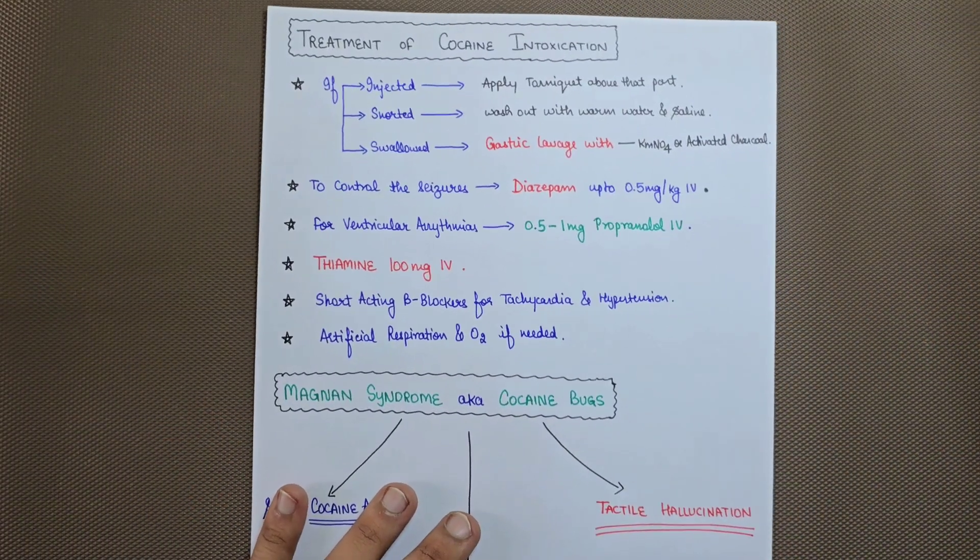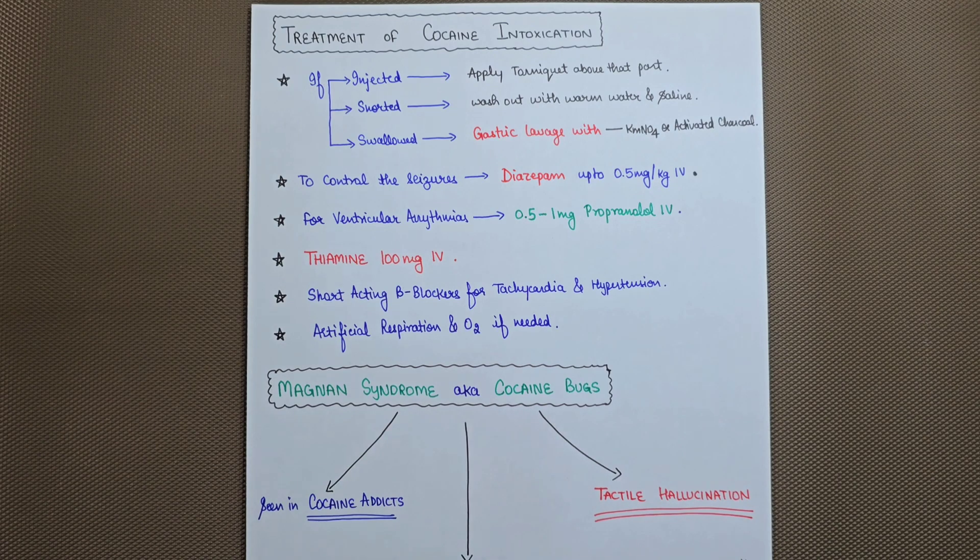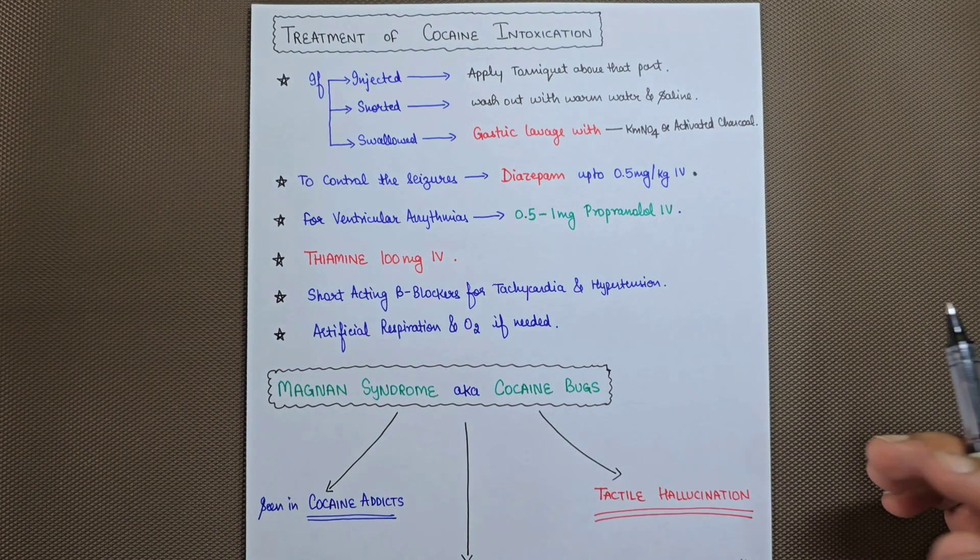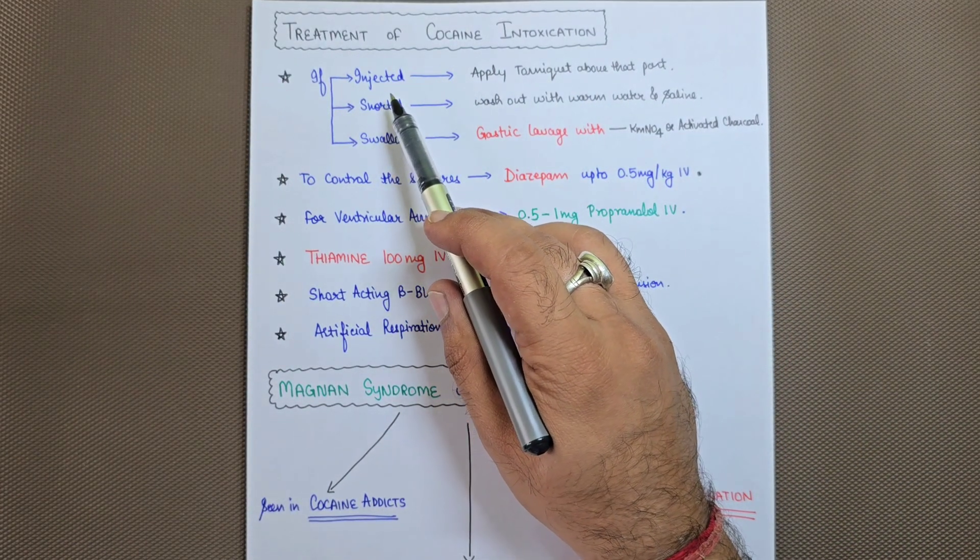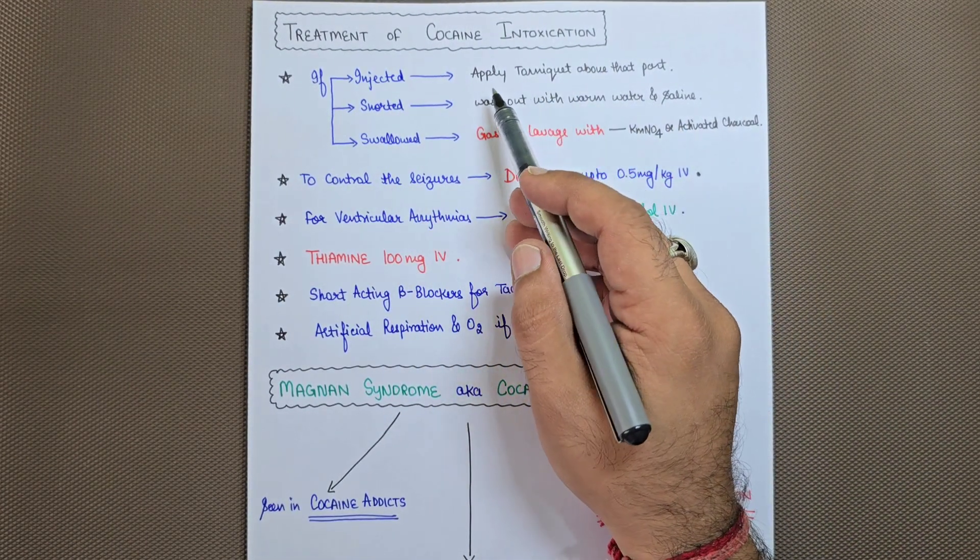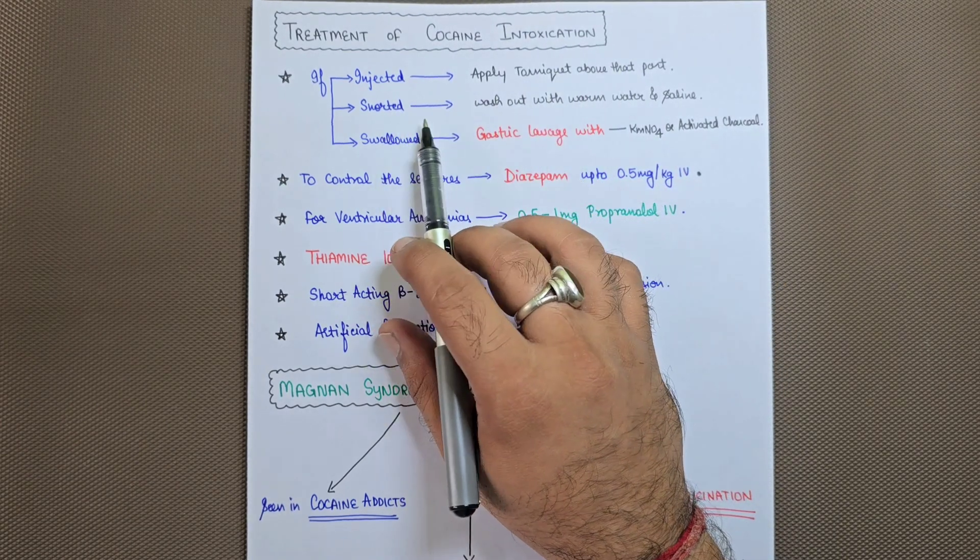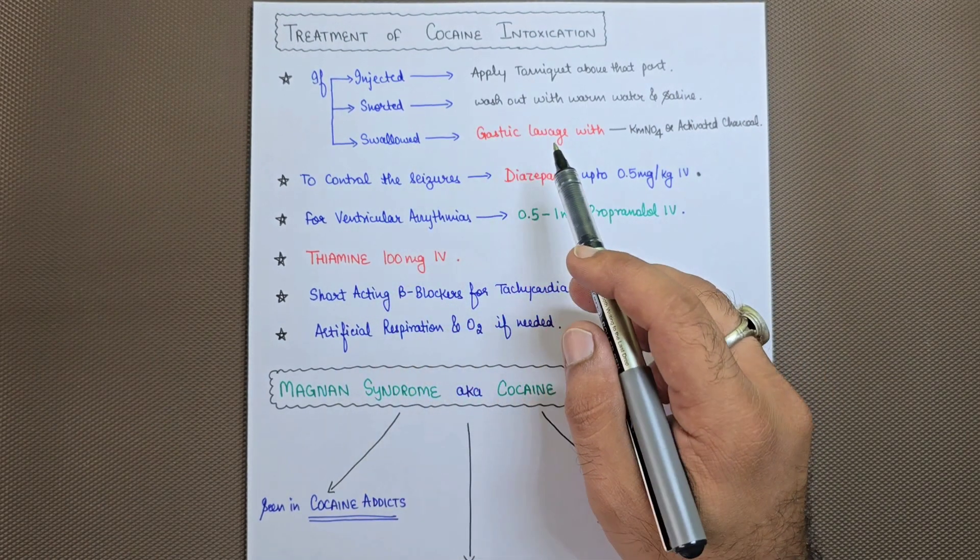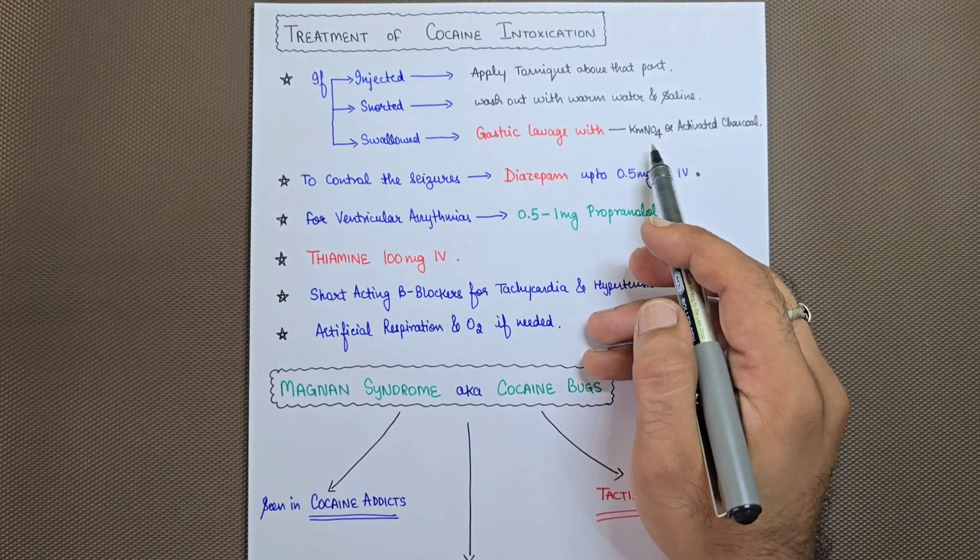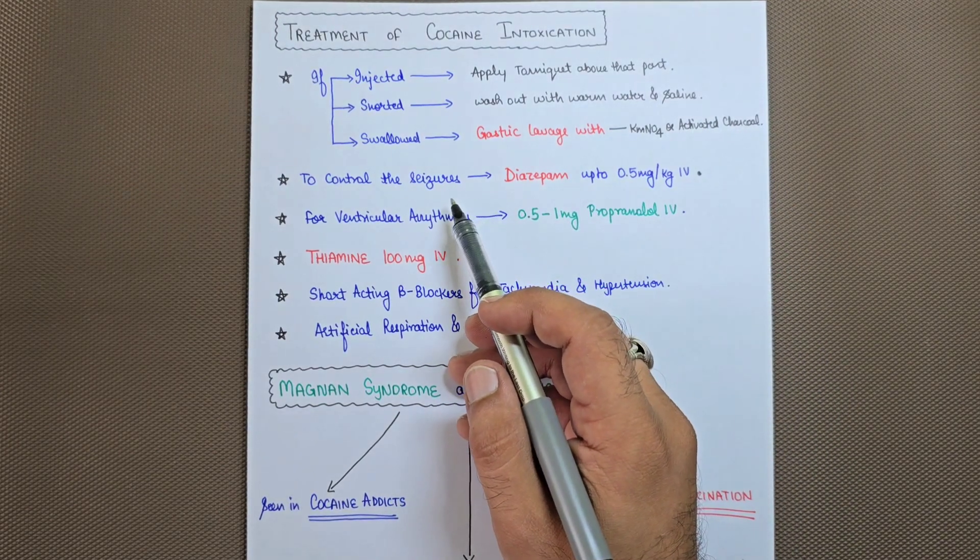Now we will see the treatment. If the patient comes to your emergency department, the main treatment includes: if the patient has injected cocaine, apply tourniquet above that part. If snorted, wash out with warm water and saline. If swallowed, gastric lavage with KMnO4 or activated charcoal.